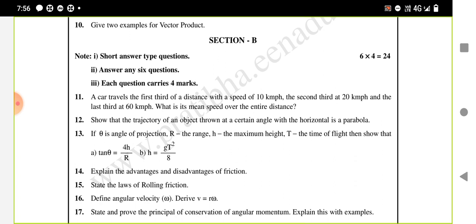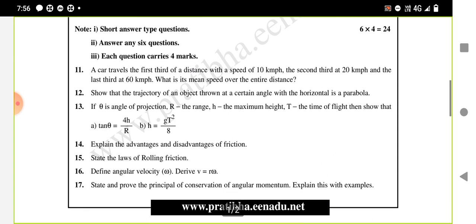The problem: a car travels the first third of a distance at a speed of 10 km per hour, second third at 20 km per hour, and last third at 60 km per hour. What is the mean speed over the entire distance? Basically you need to calculate the total speed, the distance is not given in the problem.